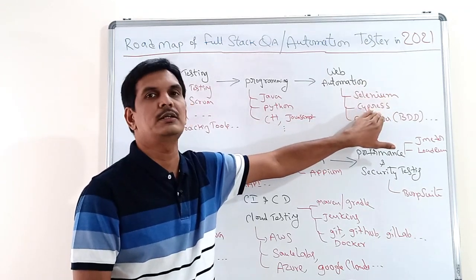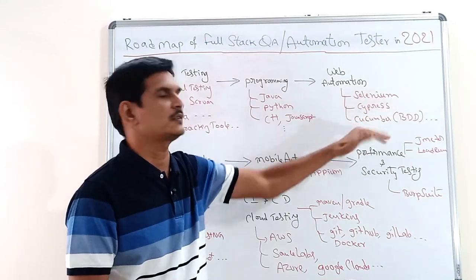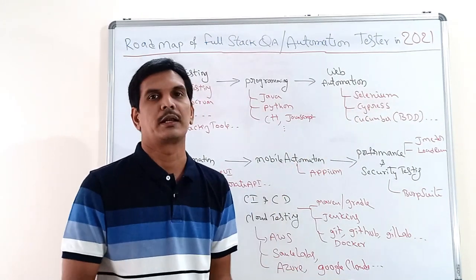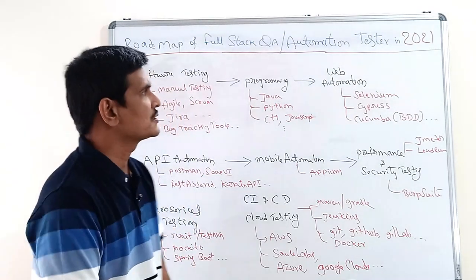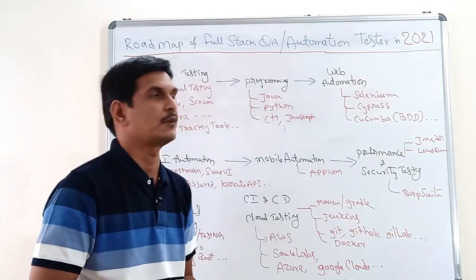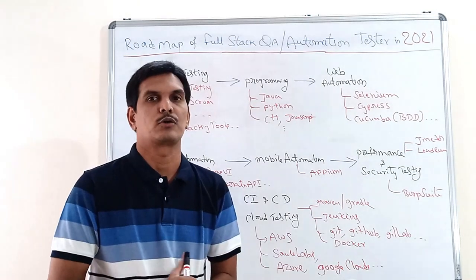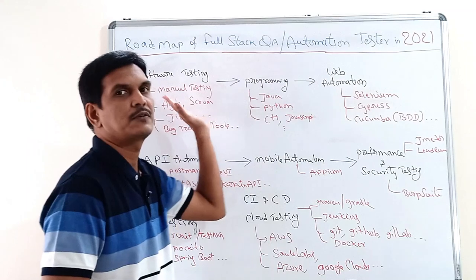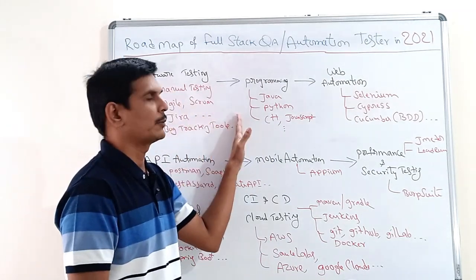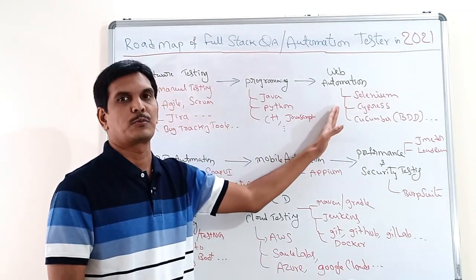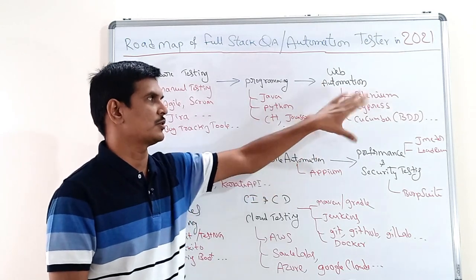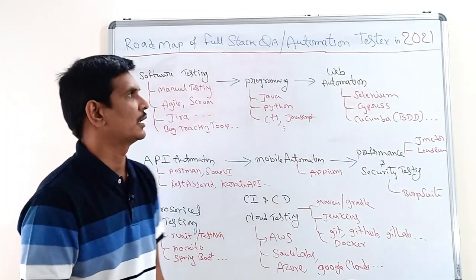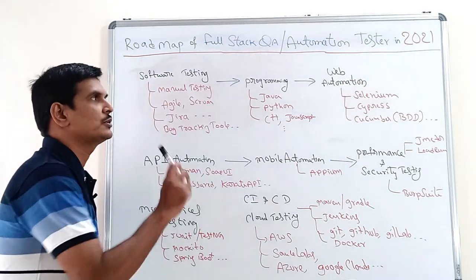There is another tool called Cypress, which is also available to automate end-to-end functionality of web applications and even supports API testing. It is slowly becoming popular, though not as established as Selenium. You can also learn some frameworks like Cucumber — which supports BDD — and TestNG or JUnit. So first start with software testing concepts, then programming, then web automation — learn Selenium first to automate web applications.